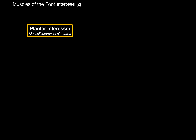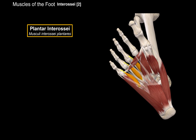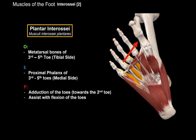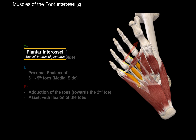Now let's talk about the interossei muscles. There are plantar interossei and dorsal interossei, and we'll start with the plantar interossei. The plantar interossei are three muscles located in the 2nd to 4th interossei spaces between the metatarsals. They originate from the tibial side of the 3rd to 5th toes and insert at the medial side of the 3rd to 5th toes. When these muscle fibers contract, they adduct the toes — pulling the 3rd, 4th, and 5th toes towards the 2nd toe — and they also assist with flexion of the toes.